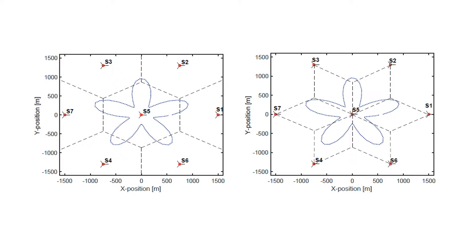Similarly, the two neighboring base stations are defined to be those which are geometrically the second and third closest to the mobile station. With these assumptions, it is possible to define areas identifying which base station provides time-of-flight measurements and which pair of base stations are detected for TDOA measurements, as shown in the left and right figures respectively.